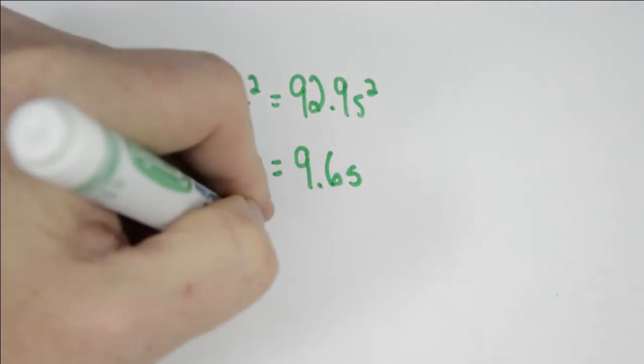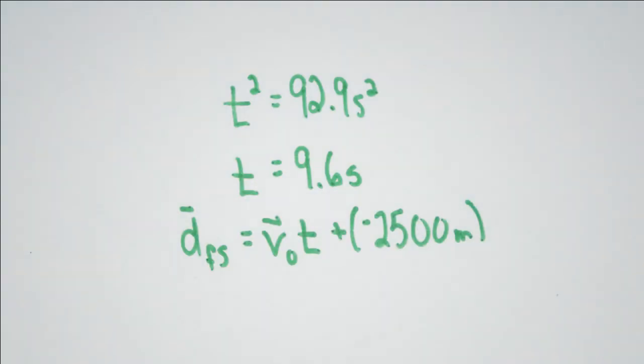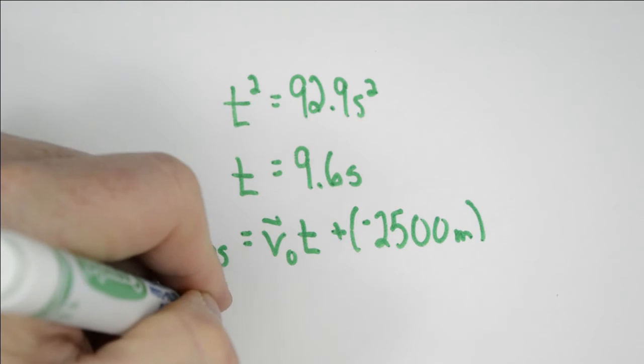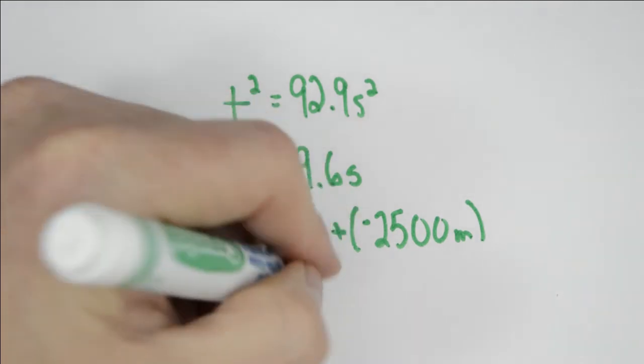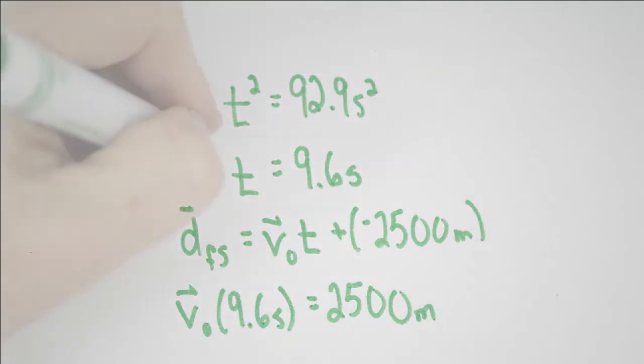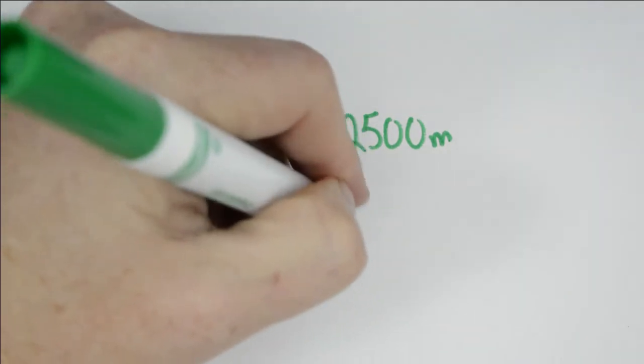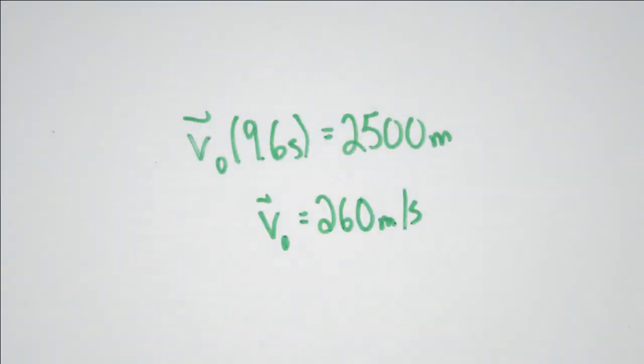So we know that Superman must get to that point in 9.6 seconds. We then take Superman's equation. We know that we want him to finish at zero, which means that we have V0 times 9.6 seconds equals 2,500 meters. We can then solve for V0, the 2,500 meters divided by 9.6 to get 260 meters per second.